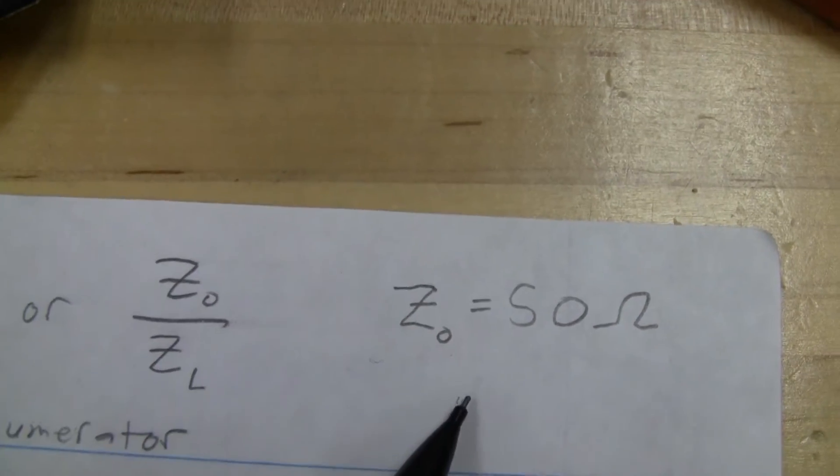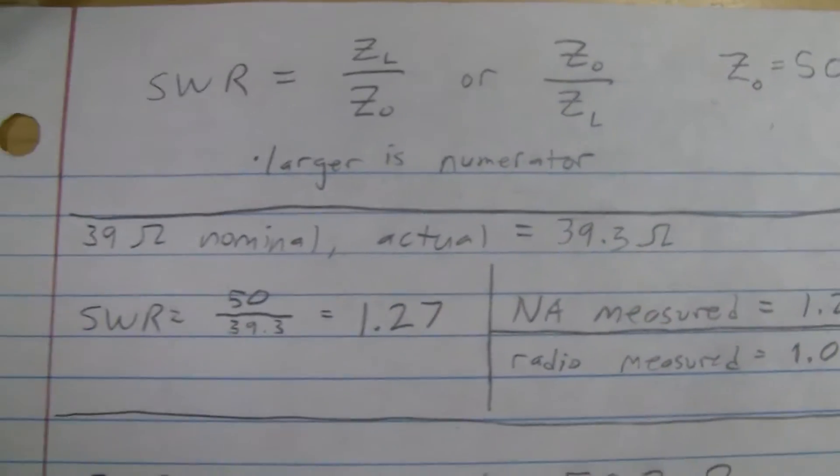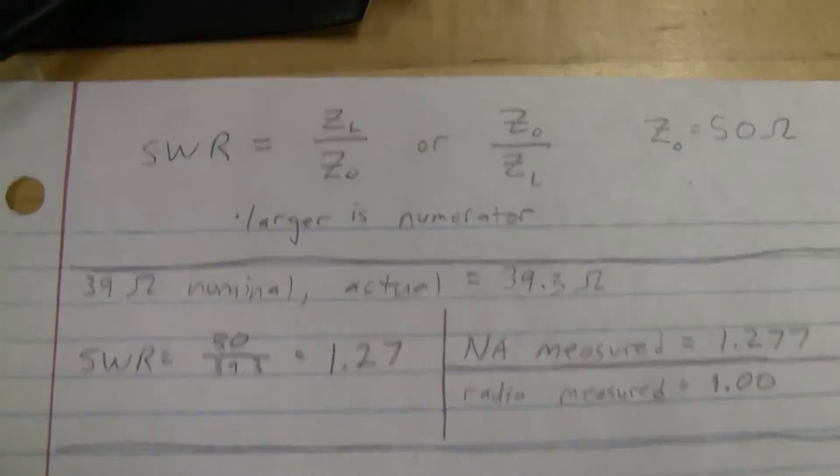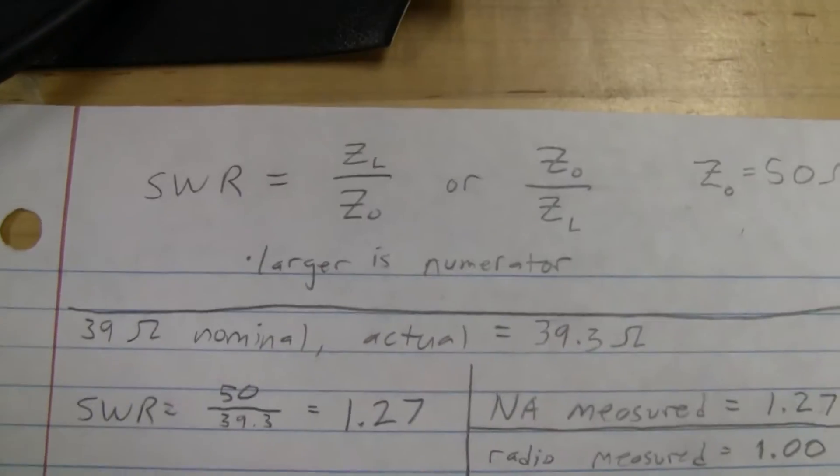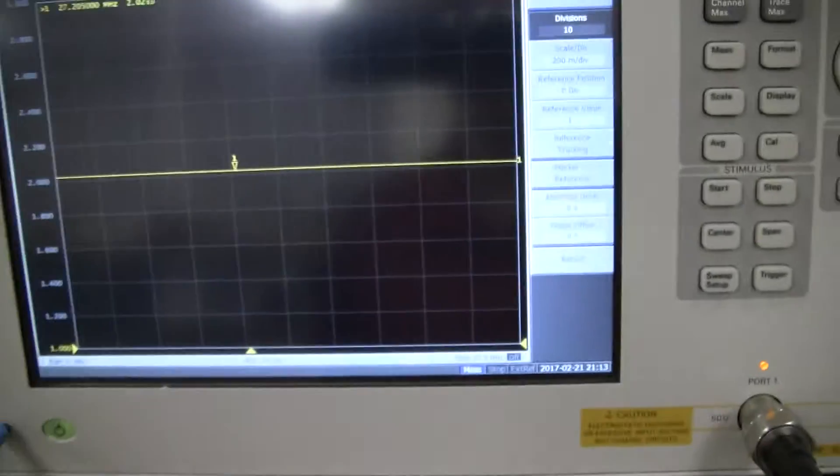So if our load impedance is less than Z0, then we're going to use Z0 as the numerator as opposed to the denominator. For radio, at least ham radio and CB radio, Z0 is always going to be 50 ohms. The way I set up this test was I used several different resistor values to simulate different load impedances, and then measured the SWR both with the radio and also with a network analyzer.